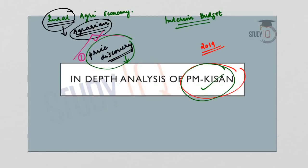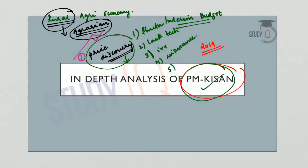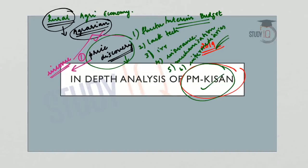Along with this, there are many other issues like fluctuations in production, lack of technology, lack of irrigation facilities, lack of insurance, lack of mechanization, and the role of intermediaries. The agricultural sector, which is predominantly in the rural areas, is vulnerable to price fall and therefore a fall in income. Many governments, both central and state, have implemented schemes to help farmers out of this situation.